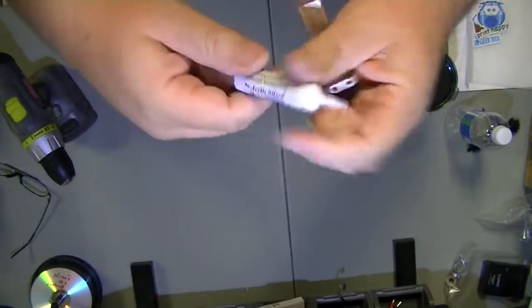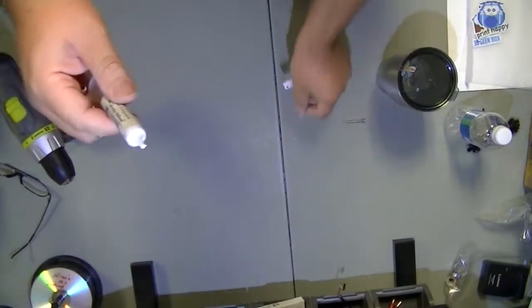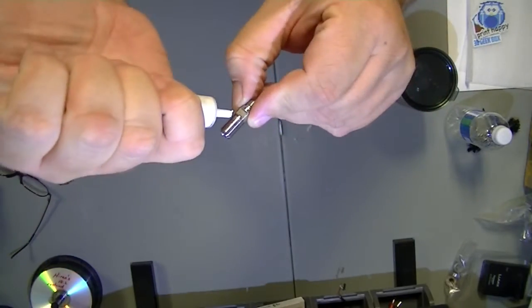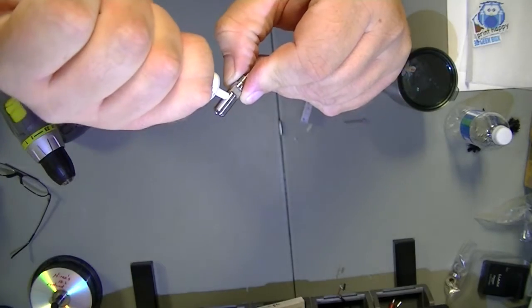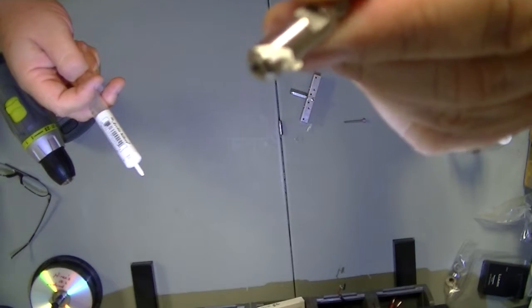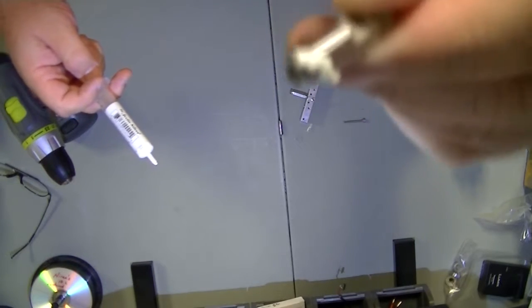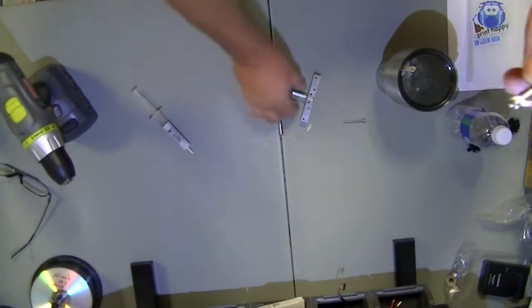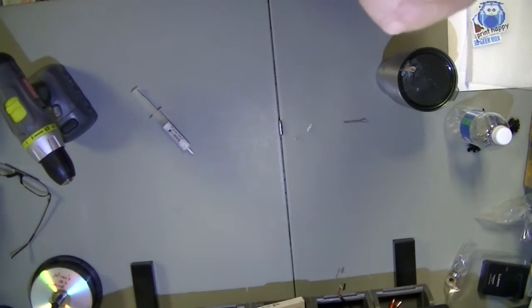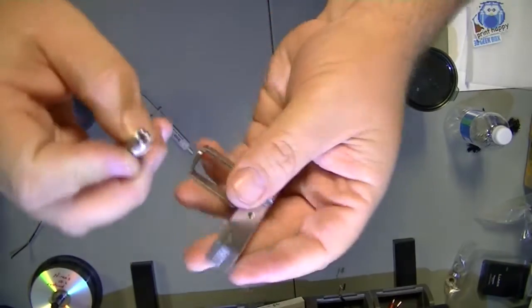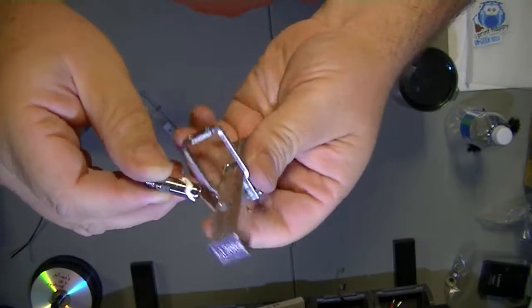We're going to put a little bit of heat sink compound. That's probably too much there, but when it goes in, I washed it afterwards too to make sure there was no more fine metal particles.